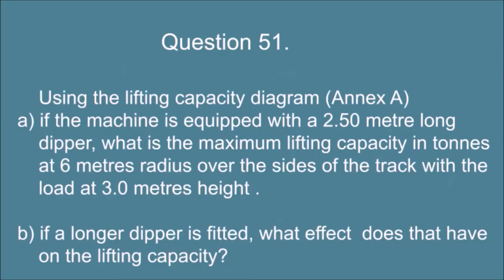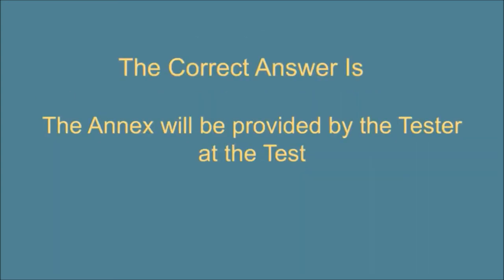Question 51. Using the lifting capacity diagram annex a, a) If the machine is equipped with a 2.5 meter long dipper, what is the maximum lifting capacity in tons at 6 meters radius over the sides of the track with the load at 3 meters height, b) If a longer dipper is fitted, what effect does that have on the lifting capacity? The correct answer is, the annex will be provided by the tester at the test.